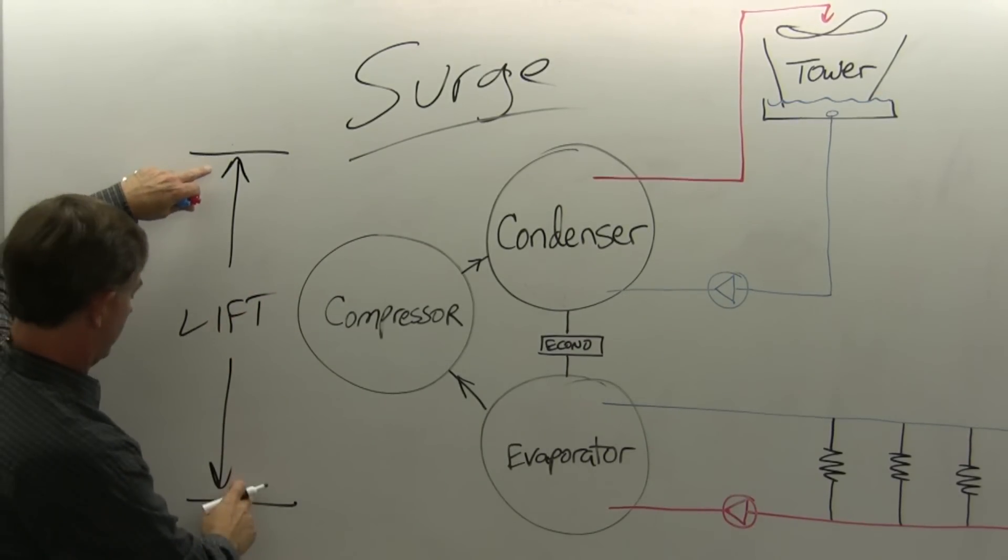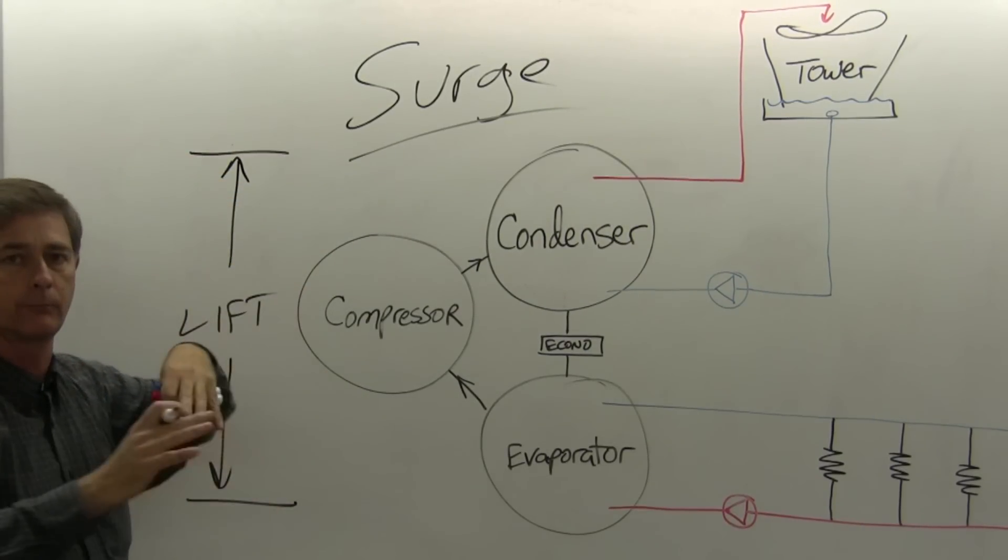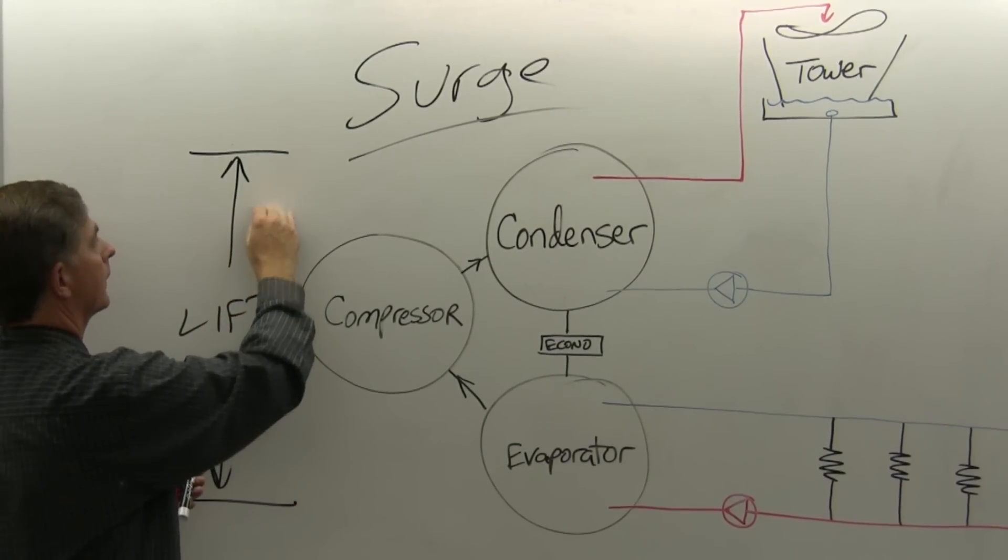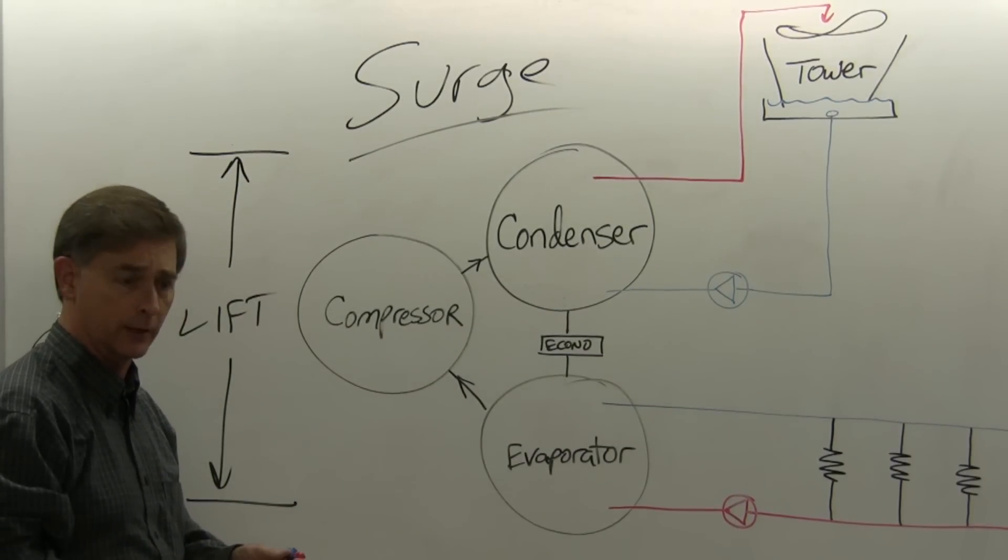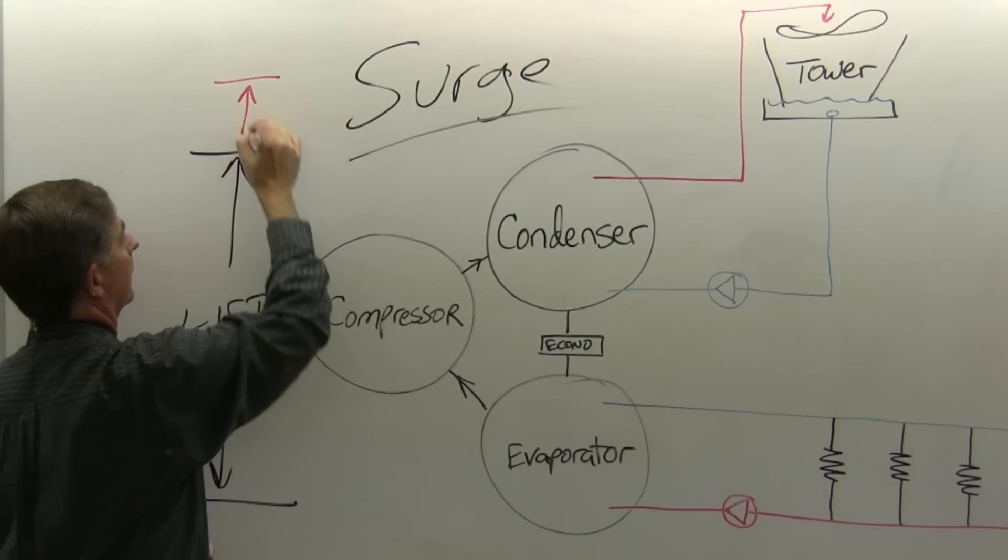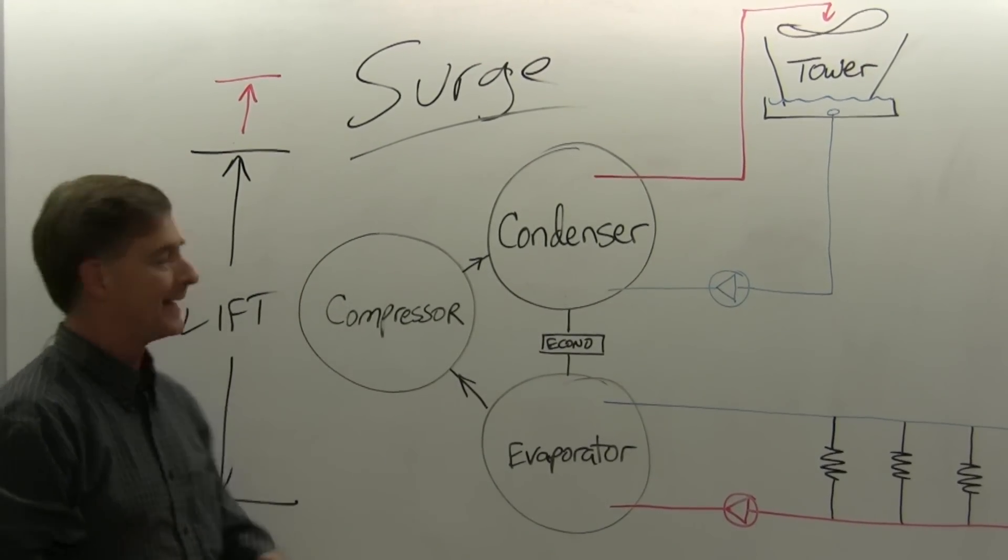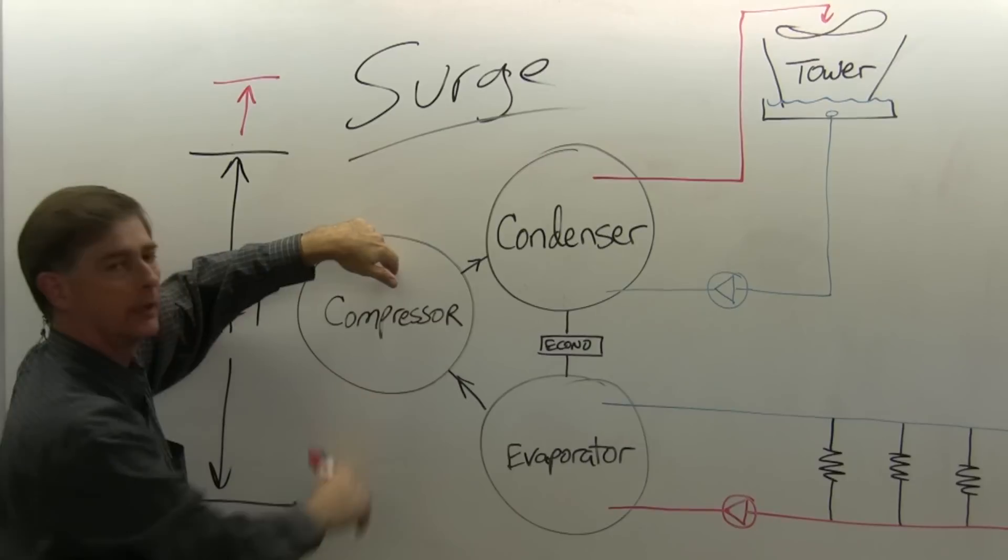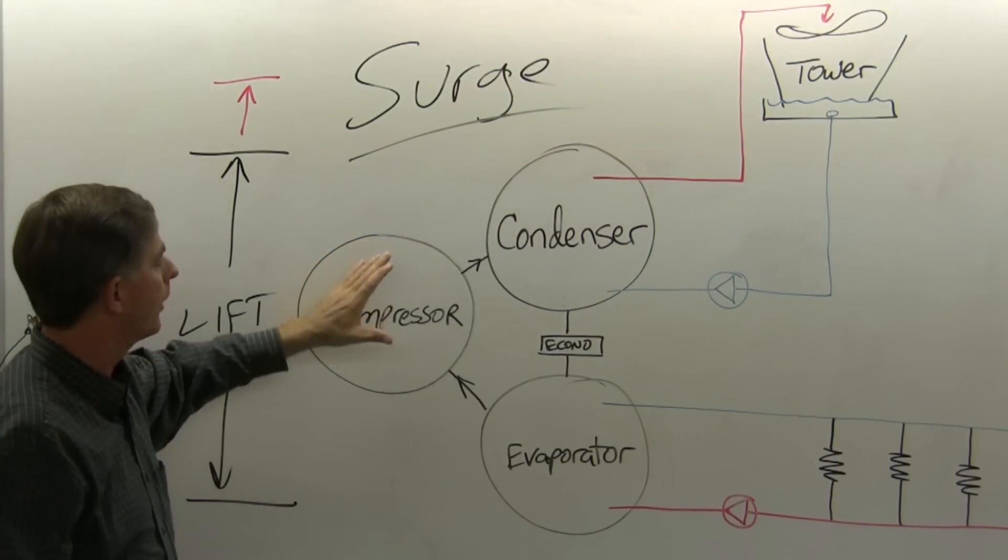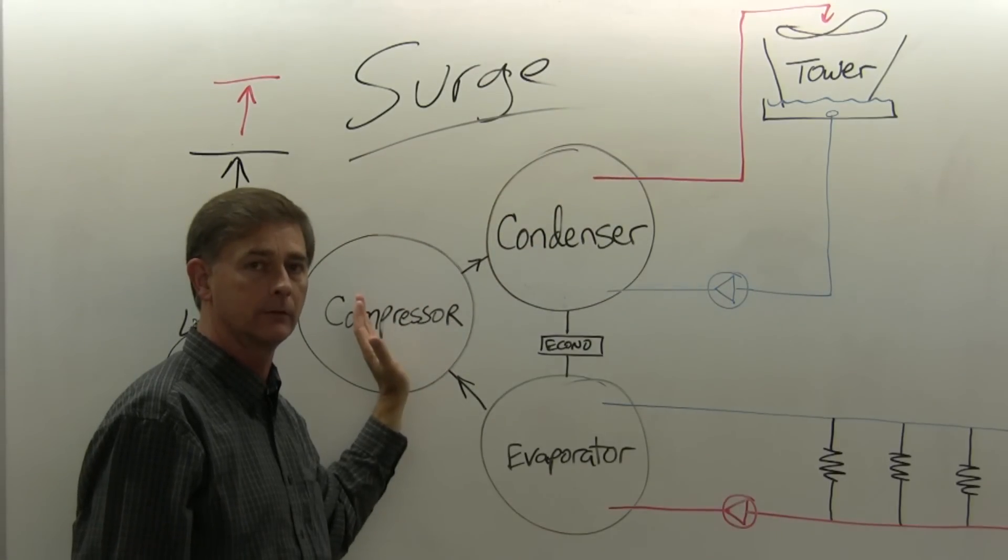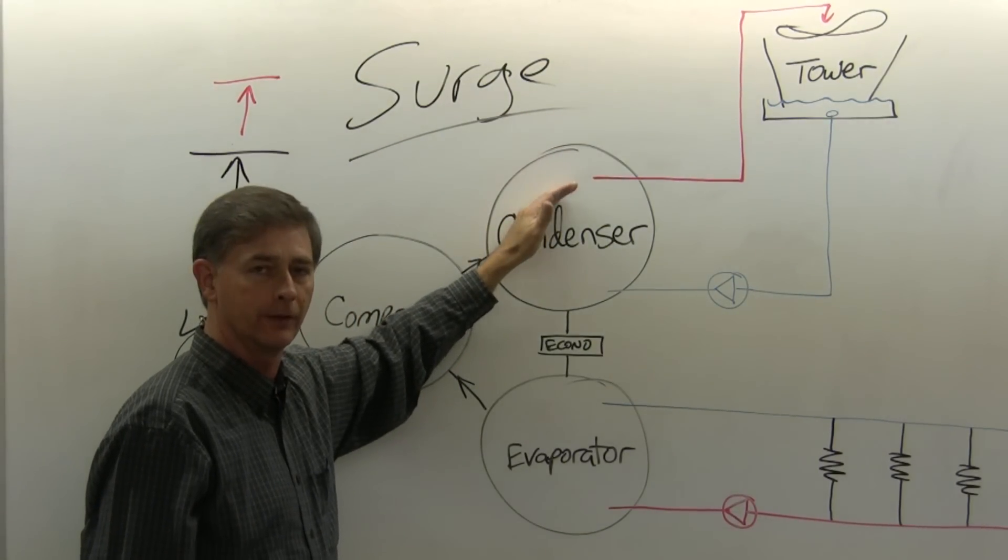Now this compressor is designed for a particular range of pressure differential. If that pressure differential goes up, an increase in pressure differential, if it gets to the point where the pressure differential exceeds the pumping capacity of this centrifugal compressor, then what happens is this compressor can no longer lift the refrigerant pressure to this high pressure.